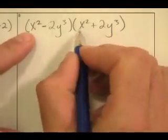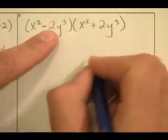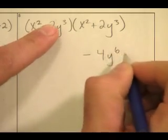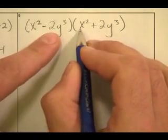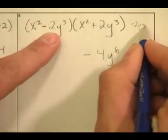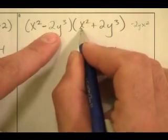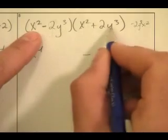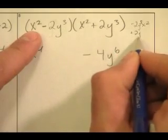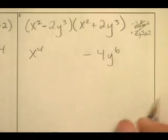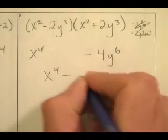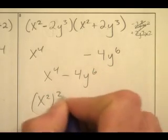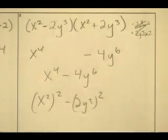Let's see. First term's going to be x to the fourth. Last term's going to be negative 4y to the sixth power. Inside's going to be negative 2yx squared. I can't do this in my head. And the outside's going to be positive 2y cubed x squared. And positive 2y cubed x squared. Oh my goodness! That middle term cancels out too! I end up with x to the fourth minus 4y to the sixth, which is the same as x squared squared minus 2y cubed squared. Look at this. It's a difference of two perfect squares.